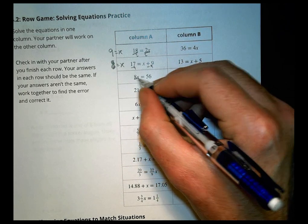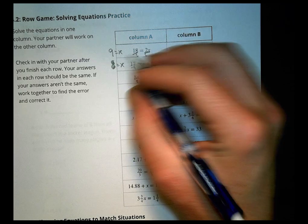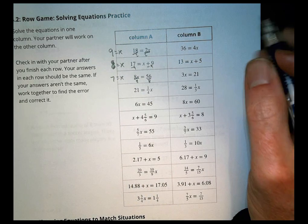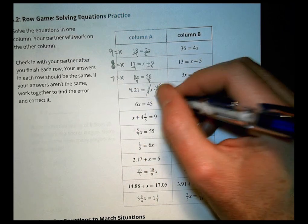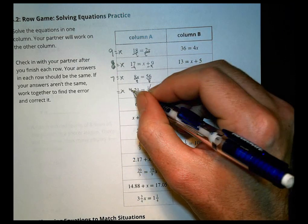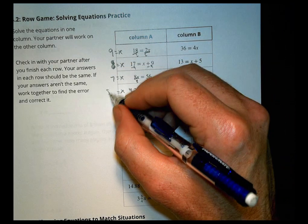Over here, I can divide both sides by 8. 56 divided by 8 is 7, so x equals 7. For this guy, I'll multiply both sides by 4, so that goes away. So that x is going to be equal to 4 times 21, which is 84.